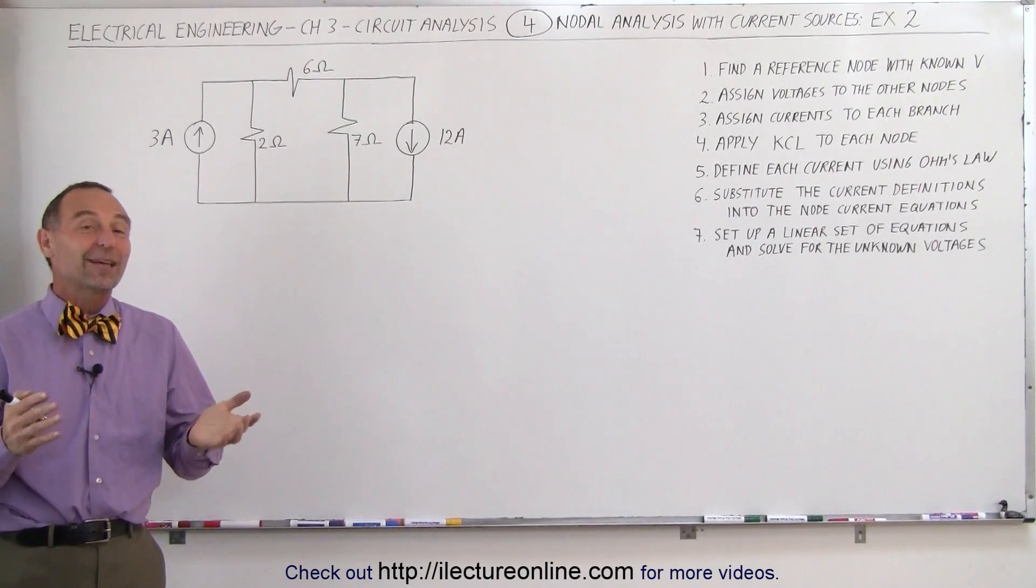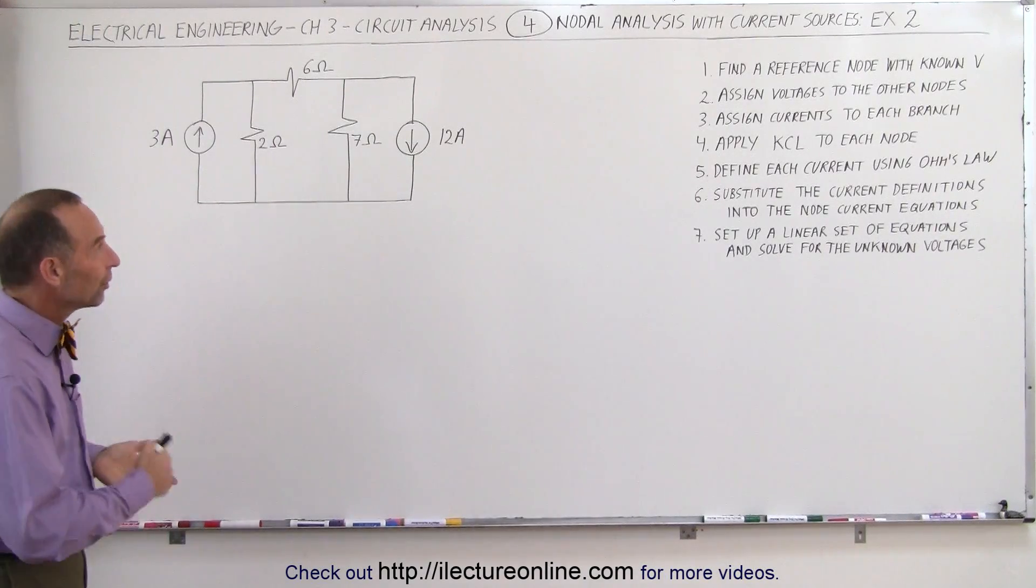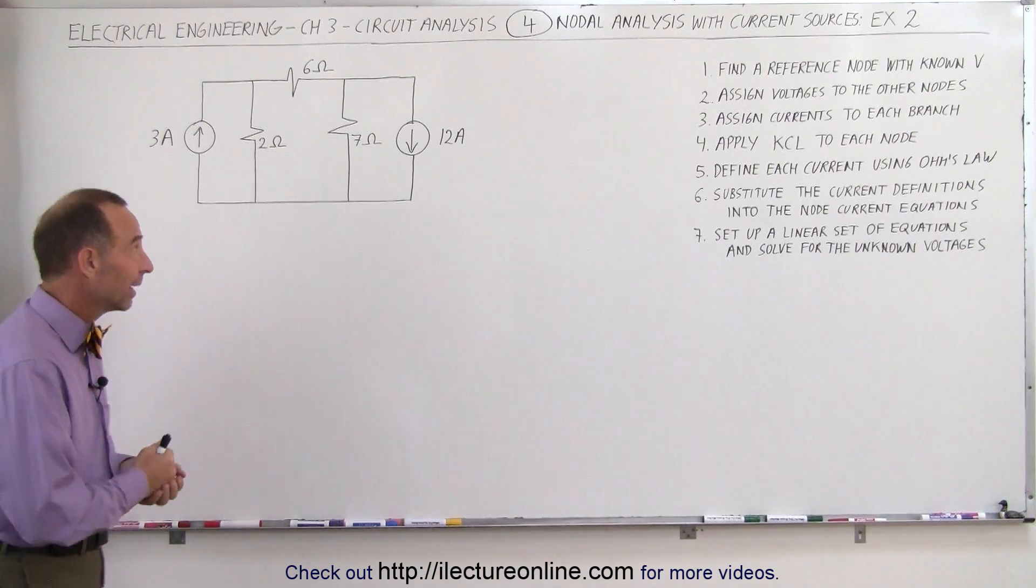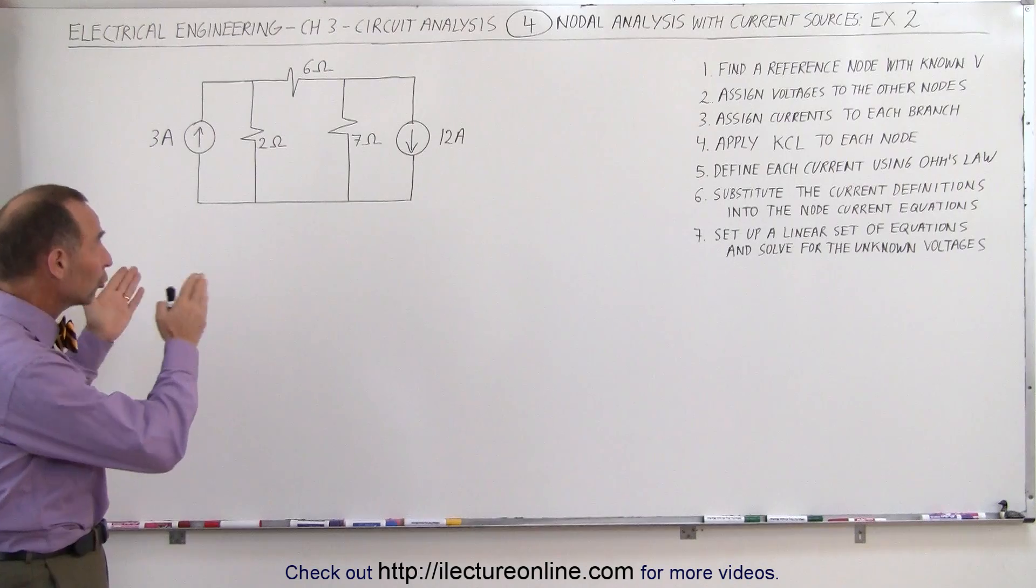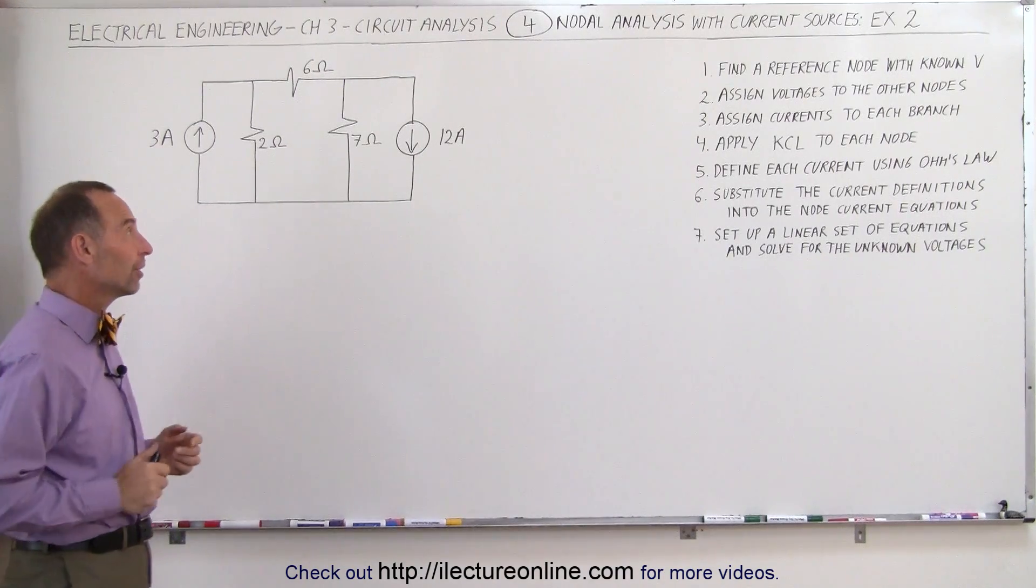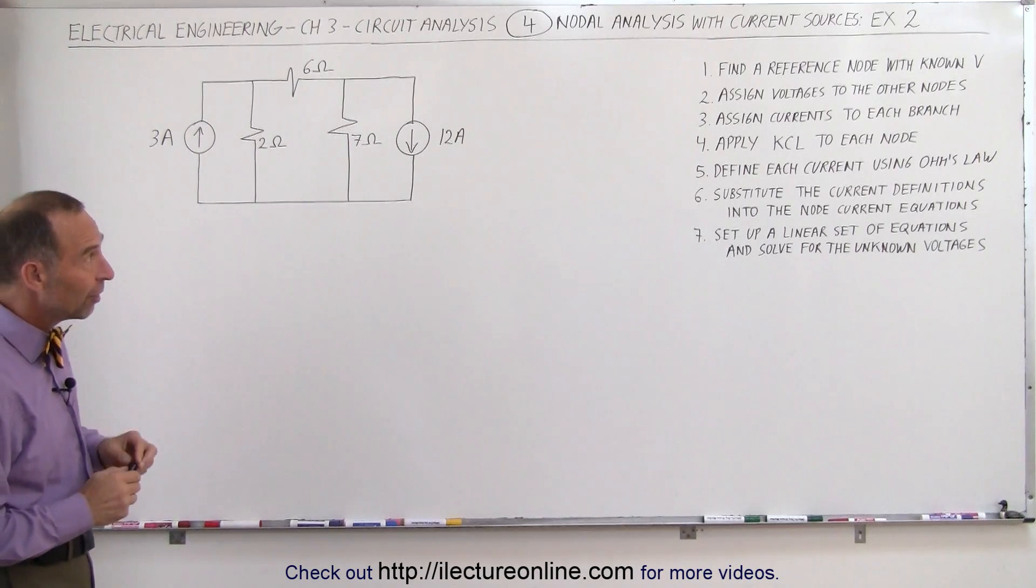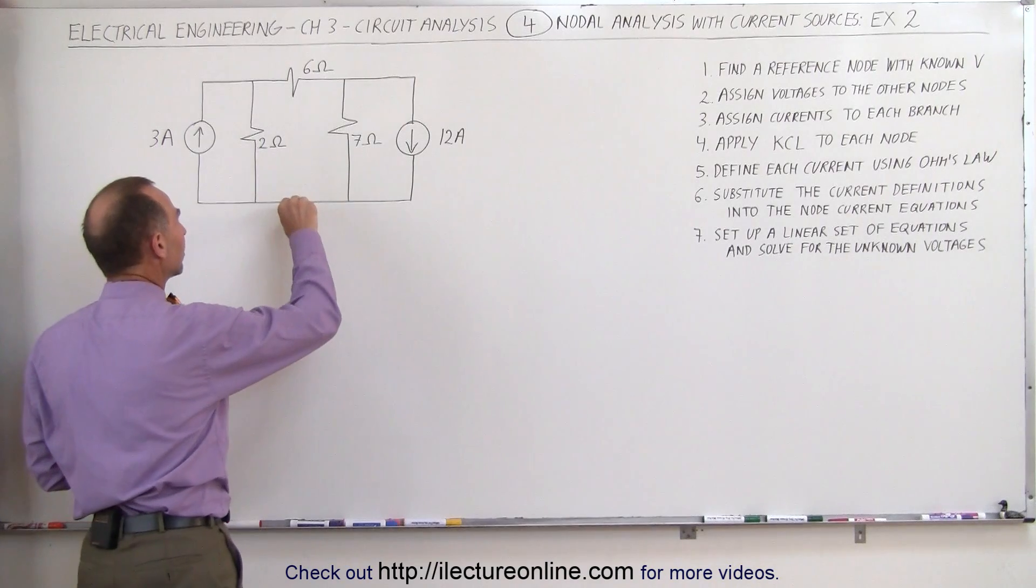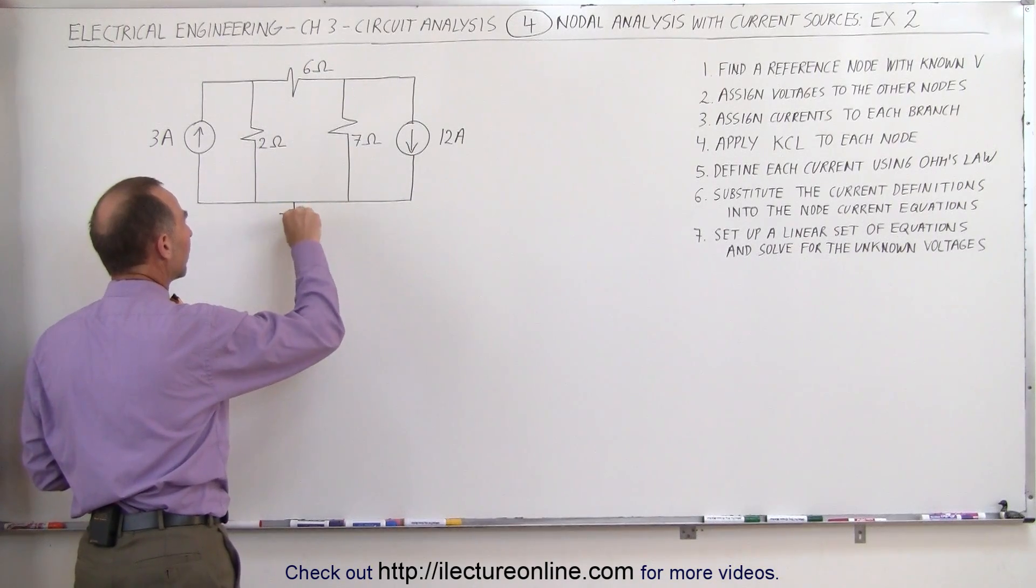Welcome to our lecture online. Here's our next example of how to implement the nodal analysis method to find the voltages and currents in a simple circuit like this. Again we have a circuit with current sources, so the nodal analysis method is really the right method to use for this. Let's follow our steps. First we want to find a reference node with a known voltage. Let's go ahead and connect the bottom of the circuit to ground that causes this to be at zero volts.